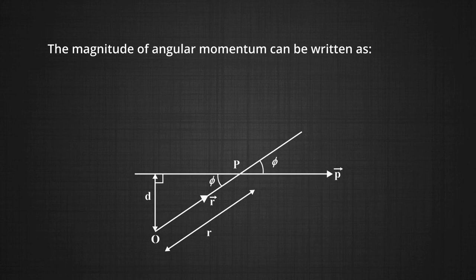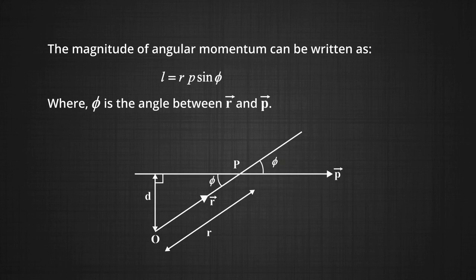The magnitude of angular momentum can be written as L equals r into p into sin of angle phi, where L is the magnitude of angular momentum, r is the magnitude of the position vector, p is the magnitude of linear momentum of the particle, and phi is the angle between the position vector of the particle and its linear momentum.